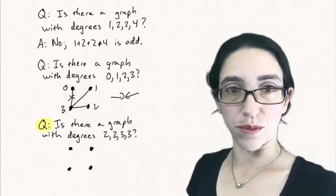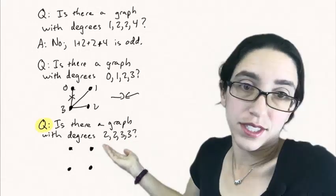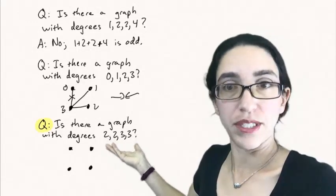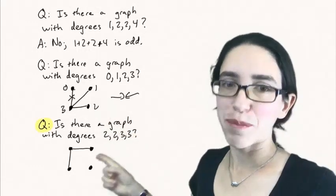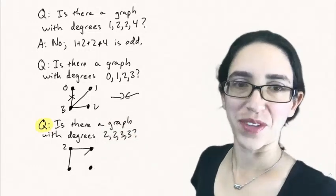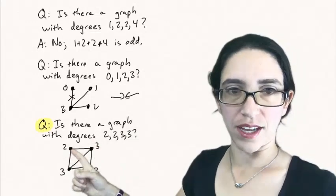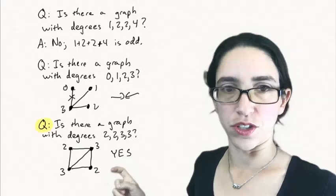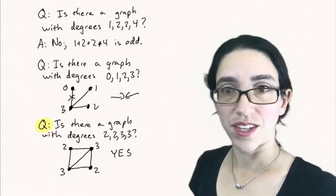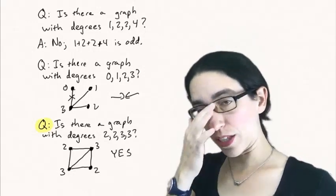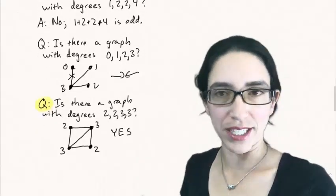So there is no graph with those degrees, but there is a graph with degrees two, two, three, and three. Now this is something we can't eliminate by saying the sum is odd, the sum is even, so that's good. And there's not necessarily a graph as we saw here, but it turns out in this case we can draw one. Let's draw a square with a diagonal and you'll notice that the two corners have degree two and the other opposite corners have degree three. And so yes, there is a graph with those degrees. So it's not always obvious, but at least we have this theorem of the sum of the degrees being even to eliminate some of the cases.